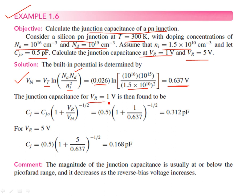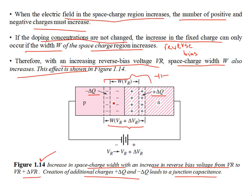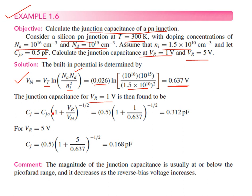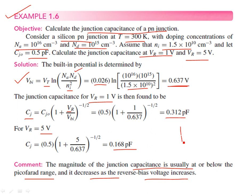If you apply 1 volt of reverse bias — with the P-type region connected to the negative and N-type to the positive — and plug this into the junction capacitance formula, it turns out to be 0.312 picofarads. If you increase from 1 volt to 5 volts reverse bias, the capacitance decreases further. The magnitude of the junction capacitance is in the picofarad range, and it tends to decrease as the reverse bias voltage increases, because the depletion width is increasing and you are uncovering more ions on either side.